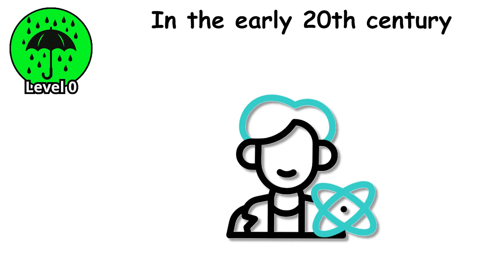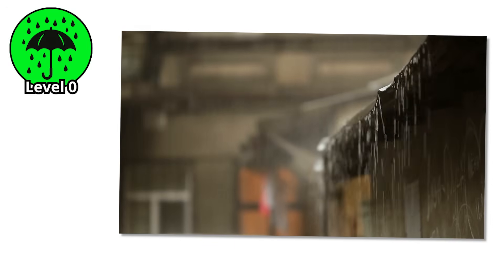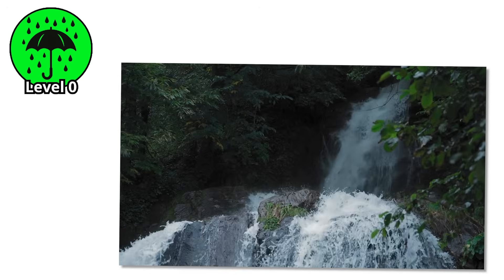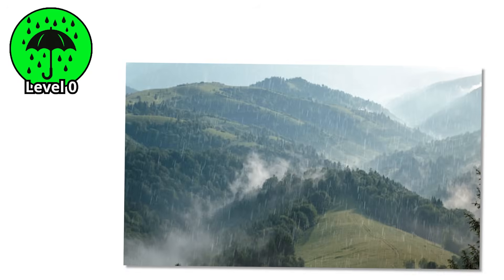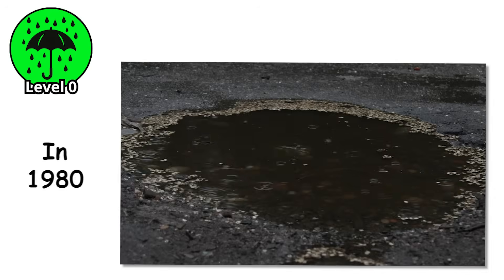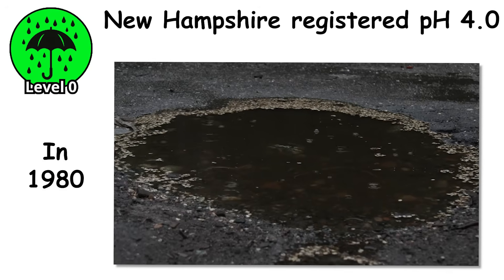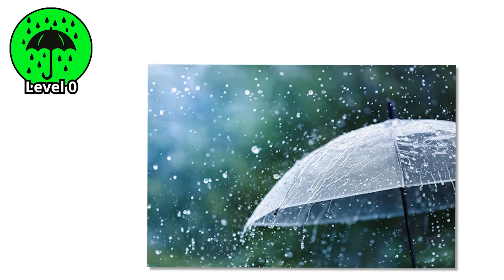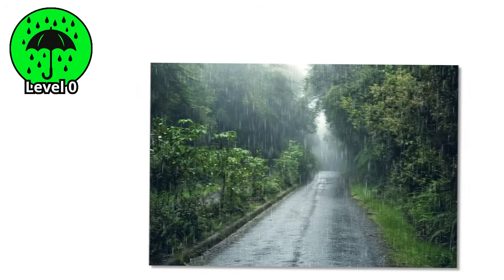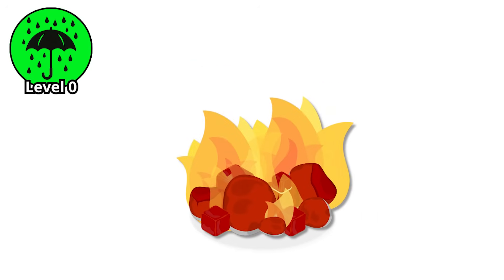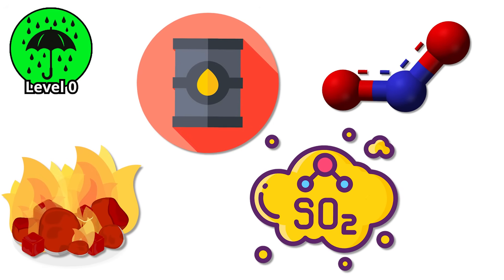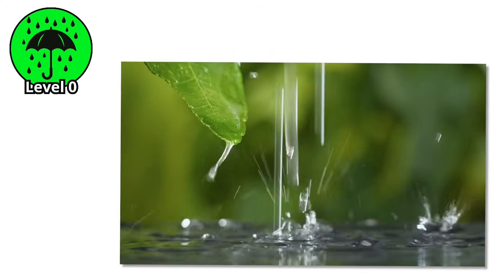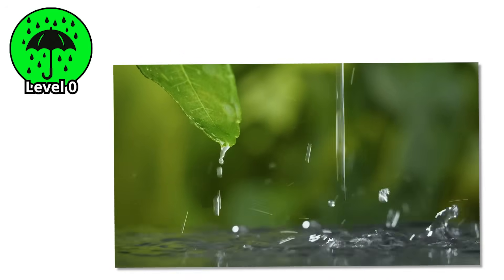It's what rain was before the Industrial Revolution rewrote the sky. In the early 20th century, scientists began to notice something strange. Rain falling near coal-burning cities measured pH levels lower than 4.5 — 10 times more acidic than clean rain. Trees were dying. Lakes were emptying of life. Entire mountain ranges looked frostbitten in the middle of summer. In 1980, rain falling over New Hampshire registered pH 4.0. Still invisible, still odorless, still falling softly — but that softness masked something more corrosive. Burning fuels like coal and oil inject sulfur dioxide and nitrogen oxides into the atmosphere, forming sulfuric and nitric acid. What comes down next is no longer just water. It's chemical weather.